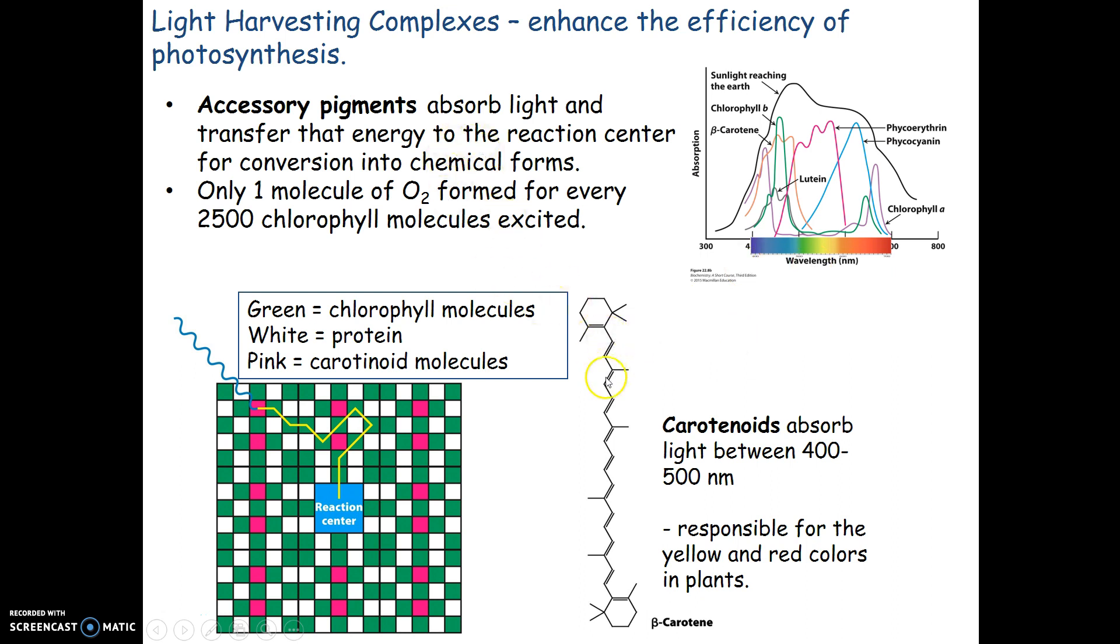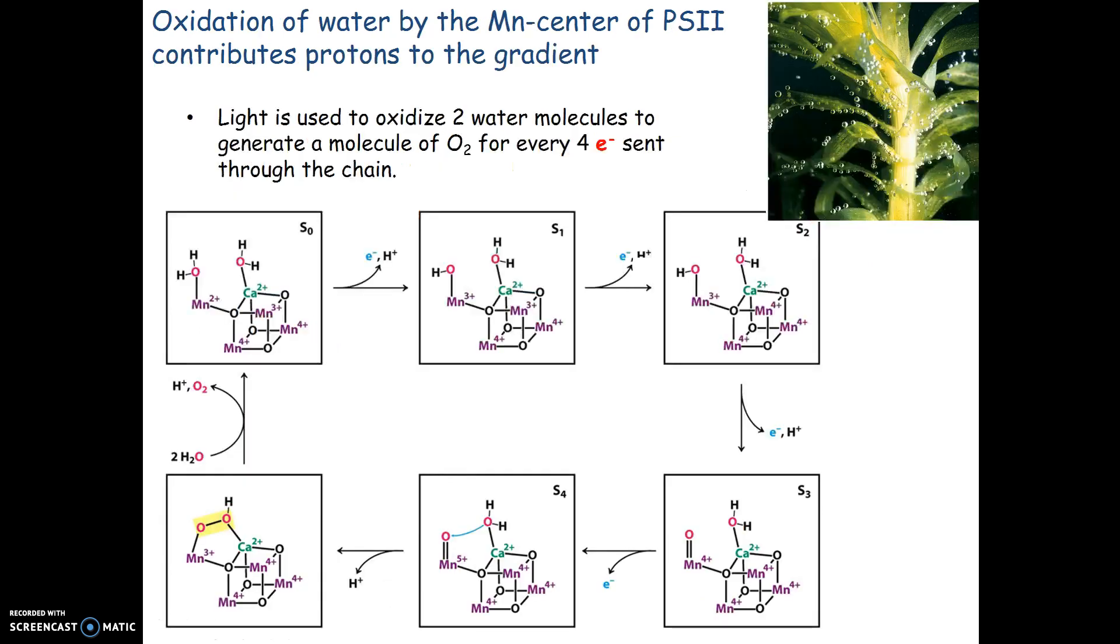Note that with our accessory pigments, many molecules have this conjugated pi system that allows for the transfer of electrons over a certain distance.